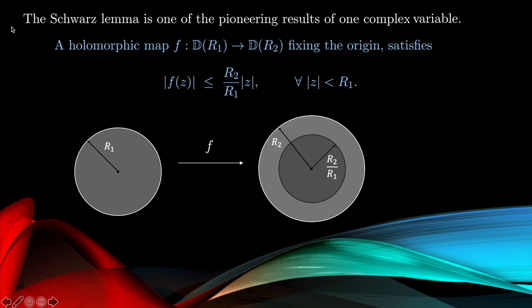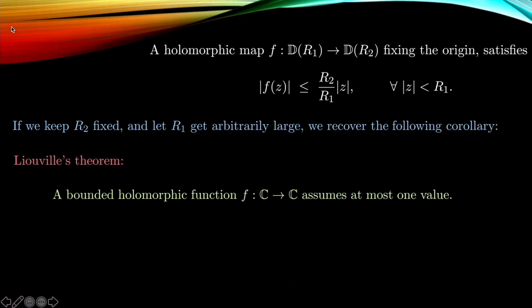If we keep r2 fixed and let r1 get arbitrarily large — so the disk in the source domain is allowed to grow arbitrarily — we recover the well-known corollary: Liouville's theorem, which states that a bounded holomorphic function on the entire complex plane assumes at most one value, i.e., the function is constant.